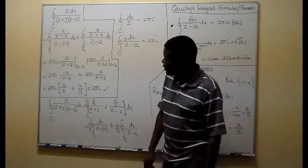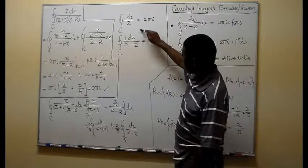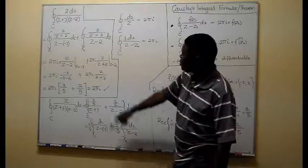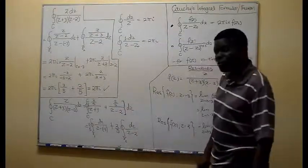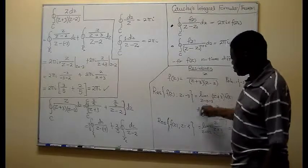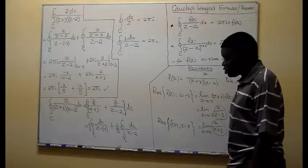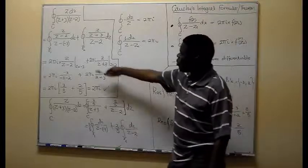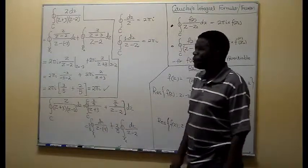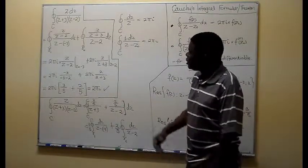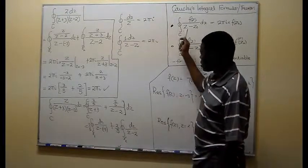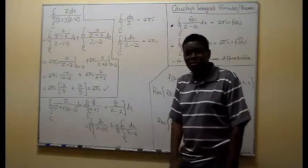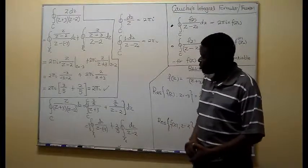The third approach, the first one was partial fractions, the second one was Cauchy's theorem with this manipulation, and the third approach would be to use residues. So in actual effect, we can be given one question and be asked to show that you can approach it using residues, Cauchy's theorem, or using partial fractions, and all that shall be shown.